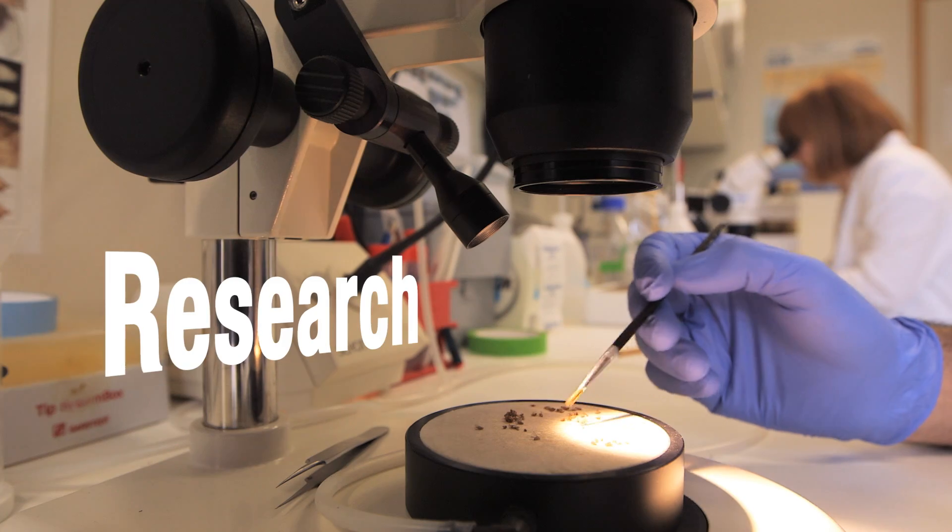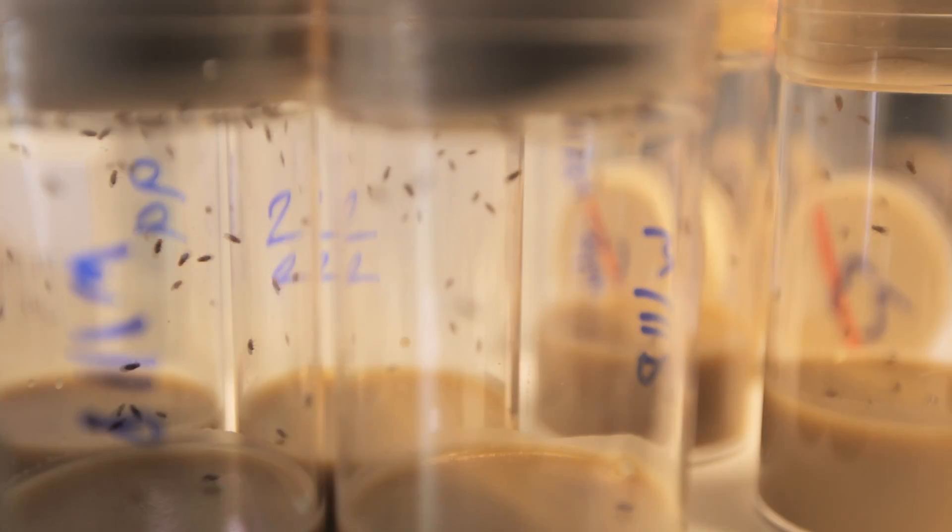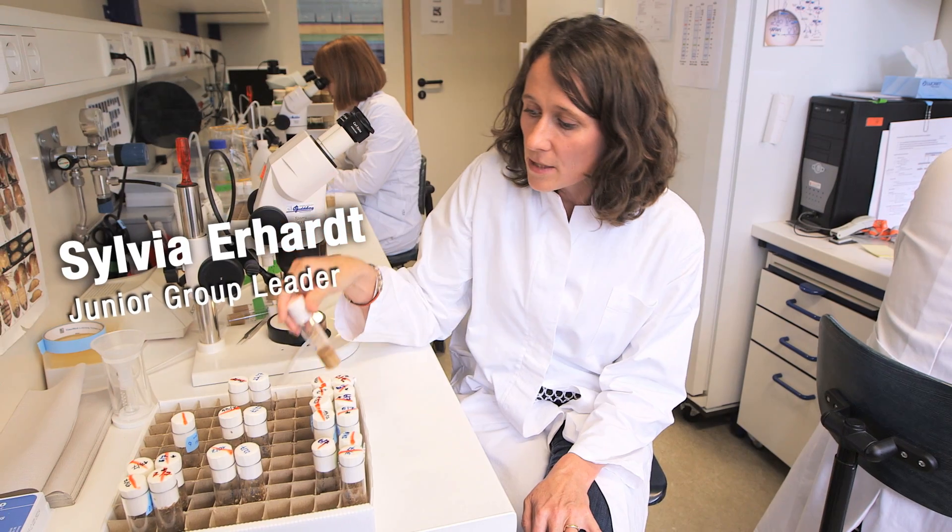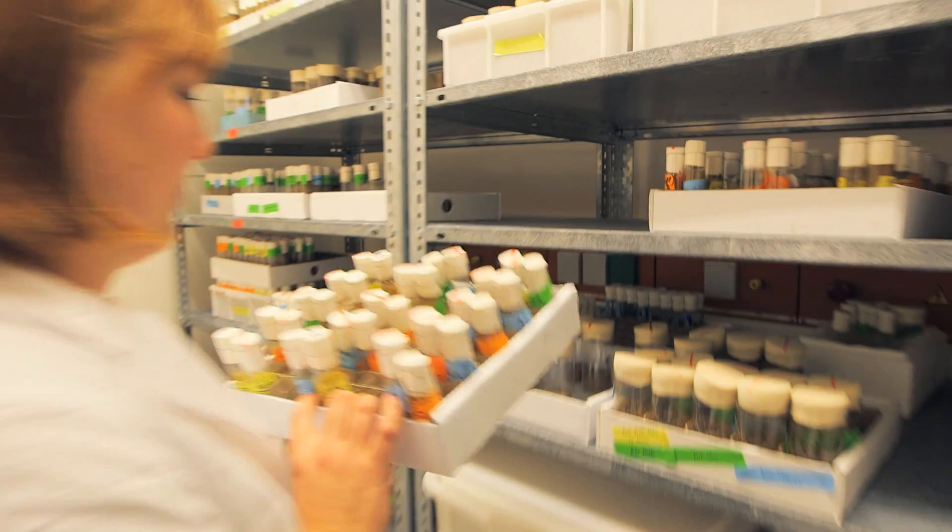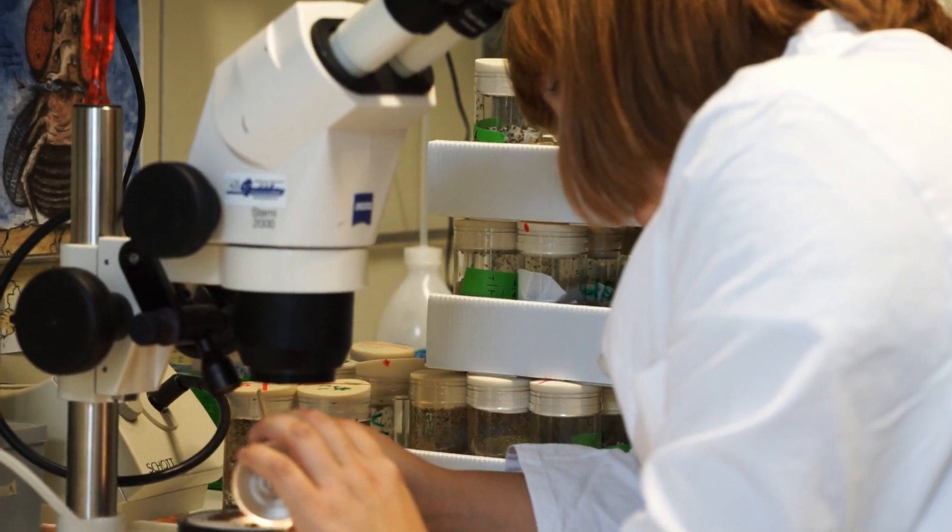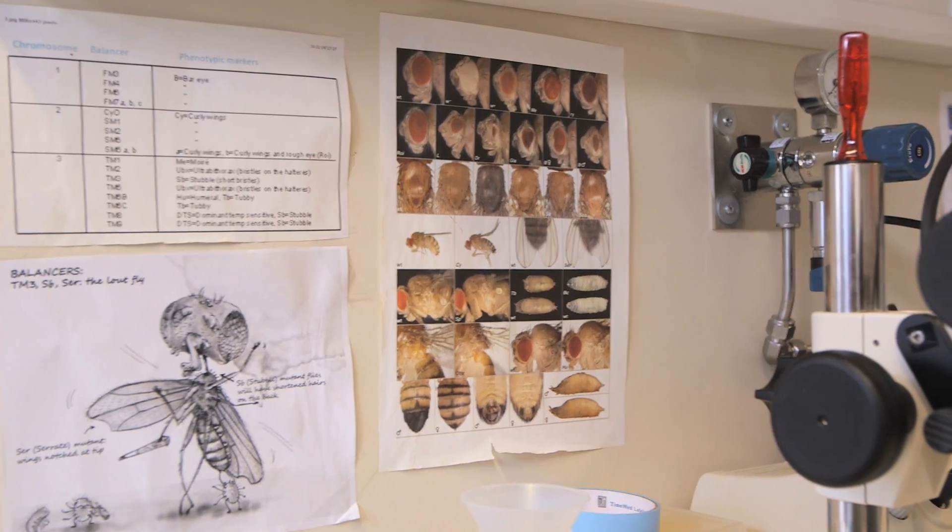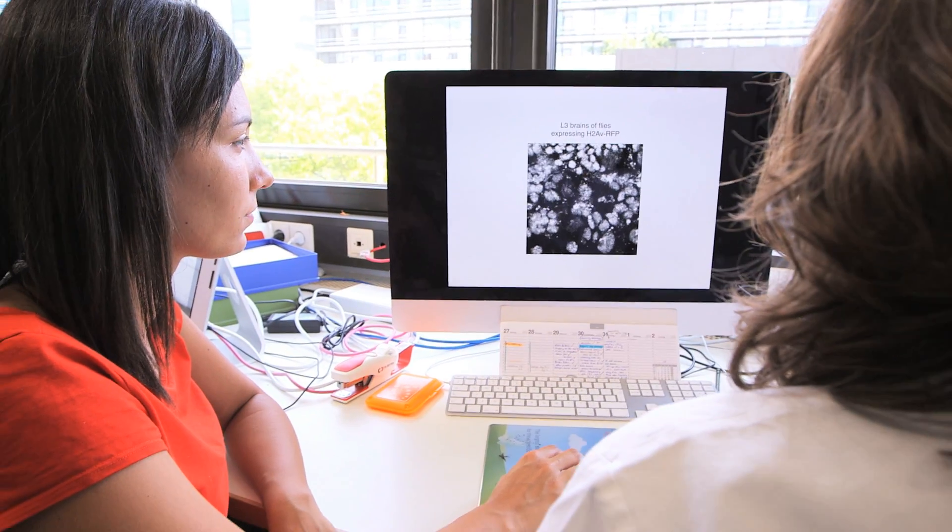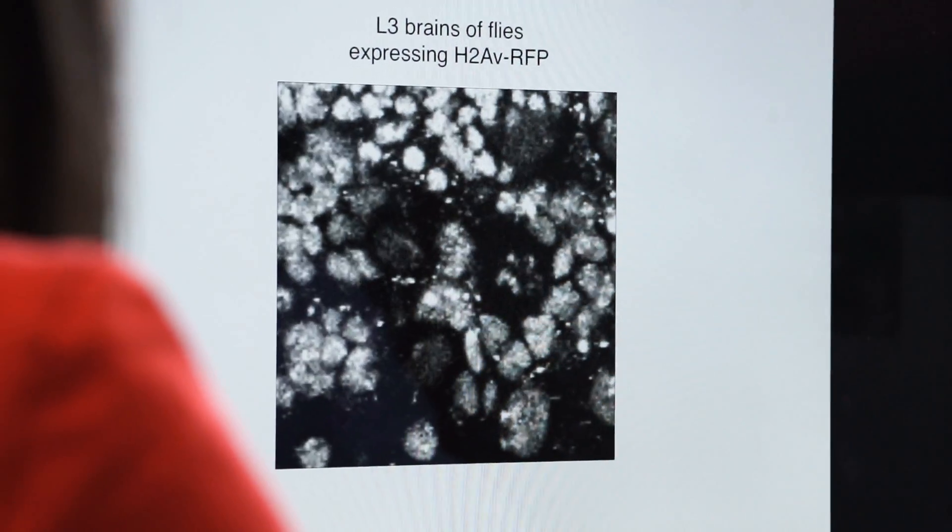The research that we are doing with these fruit flies, Drosophila melanogaster, is we look how chromosomes divide during cell division. One chromosome region is important, that chromosome region is called the centromere, and we genetically manipulate those flies to see how the centromere functions in this chromosome segregation.